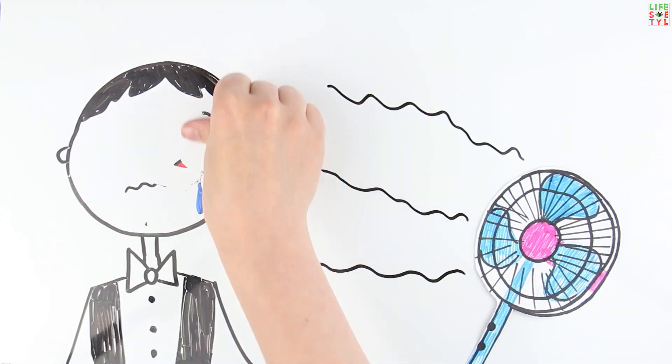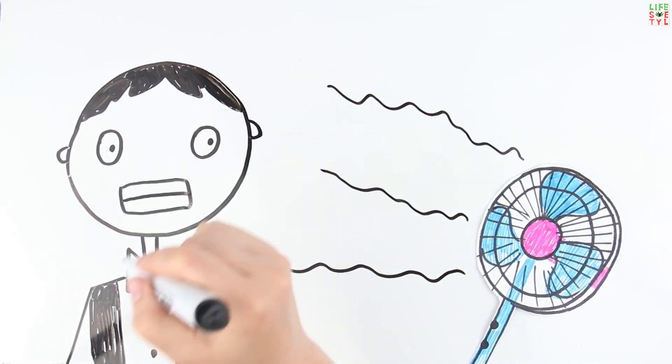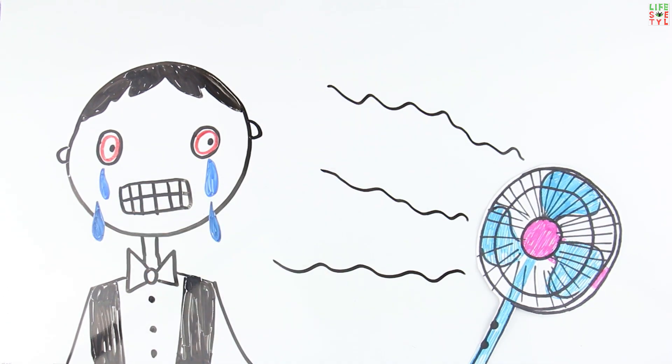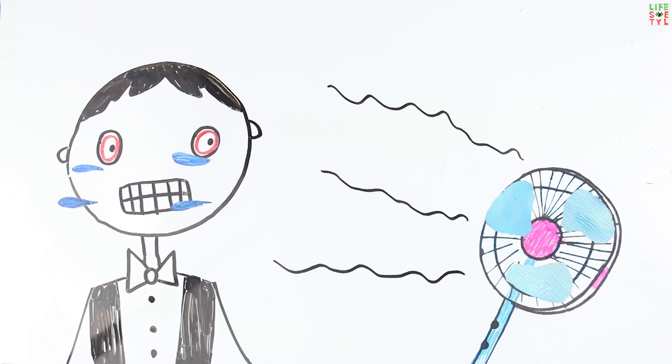Moisturizing also explains why your eyes water in a strong wind. Gusts of air dry the eye surface and lacrimal glands begin to actively produce fluid.